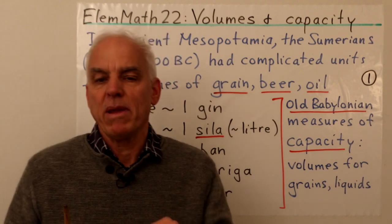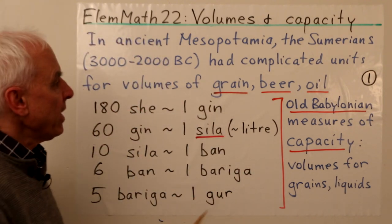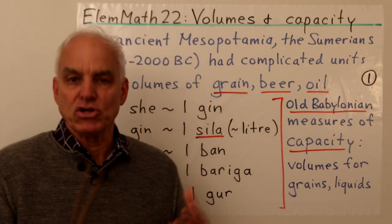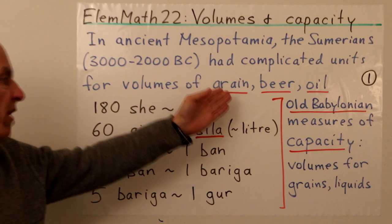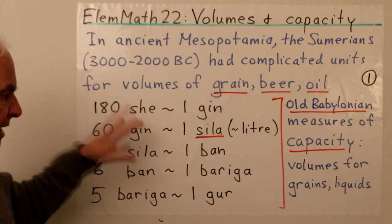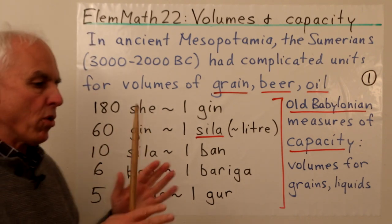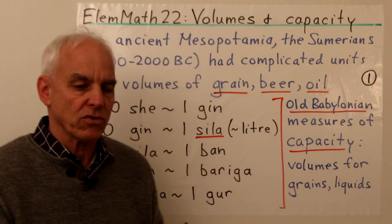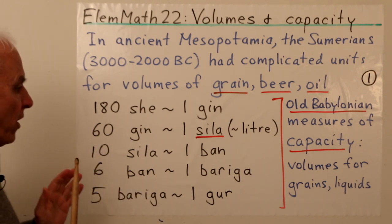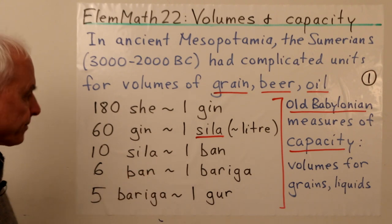The origins of this go back to ancient Egypt and ancient Mesopotamia. The Sumerians, who lived around 3,000 to 2,000 BC, had a whole bunch of complicated units to measure this kind of volume — for perhaps grain, beer, or oil. A little bit later, in the Old Babylonian times around 1,900 to 1,600 BC, the measurement systems coalesced with more uniformity over a wider region.